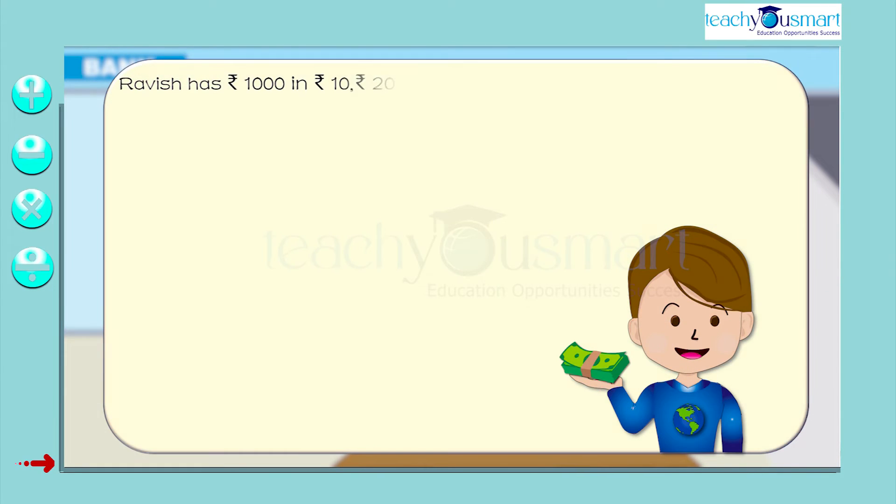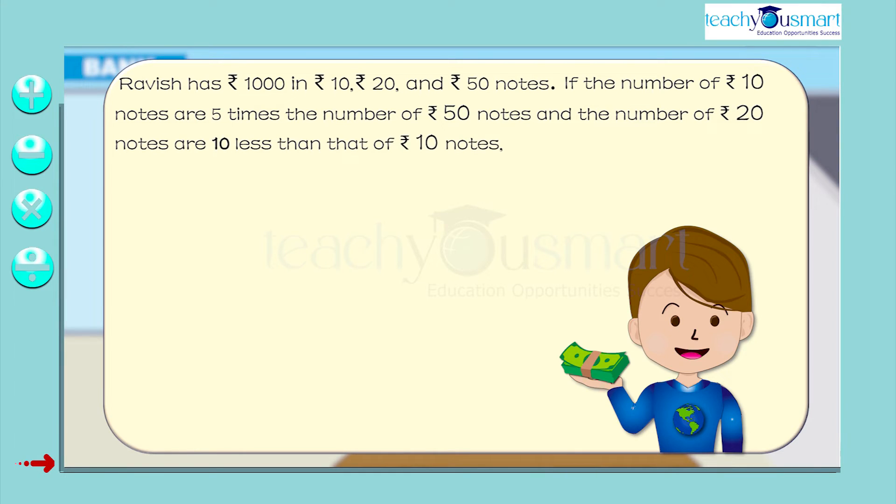Ravish has 1000 rupees in 10, 20, and 50 rupee notes. If the number of 10 rupee notes is 5 times the number of 50 rupee notes, and the number of 20 rupee notes are 10 less than that of 10 rupee notes, then how many notes does he have in each denomination?